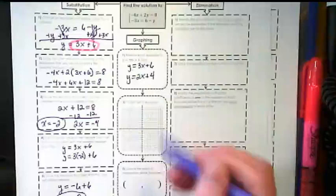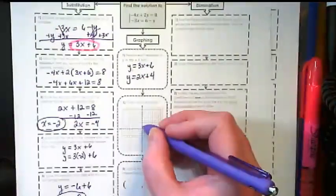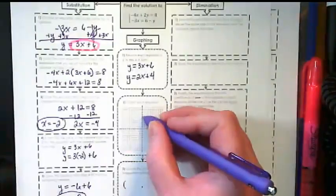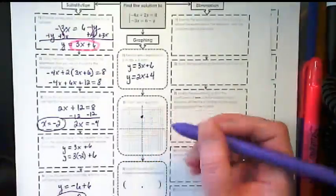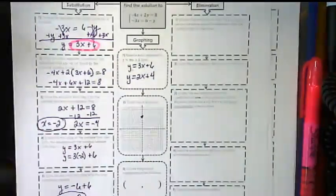We can now graph these lines by starting with positive 6. And we're going to show rise over run of 3 over 1.